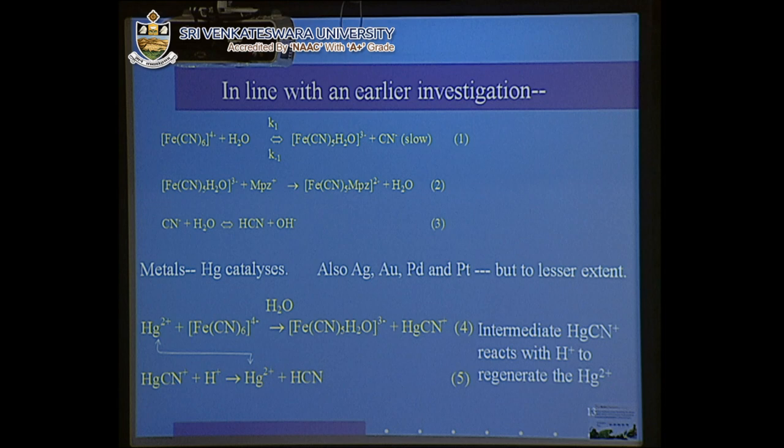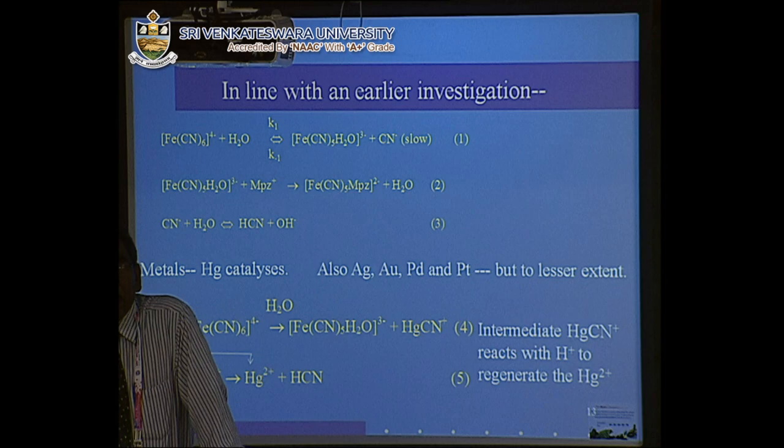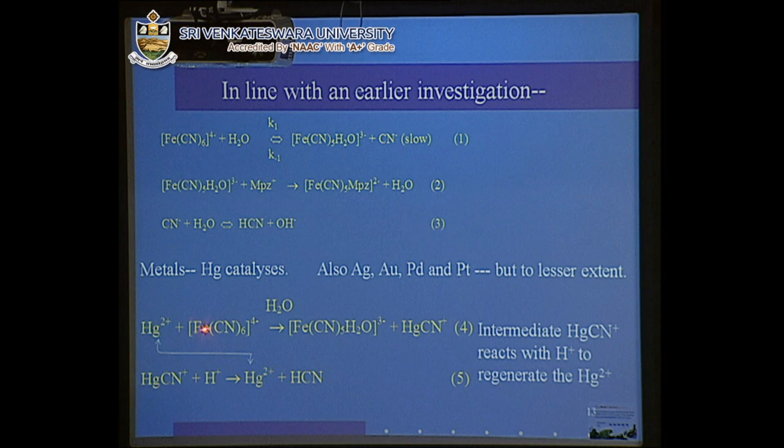Based on a previously proposed mechanism for this reaction, many metals catalyze the reaction. Mercury is one of the very strong catalysts because the cyanide-mercury interaction is based on the soft acid and hard base principle — this reaction between mercury and cyanide is quite fast. Mercury abstracts one of the cyanides to form Hg-CN.